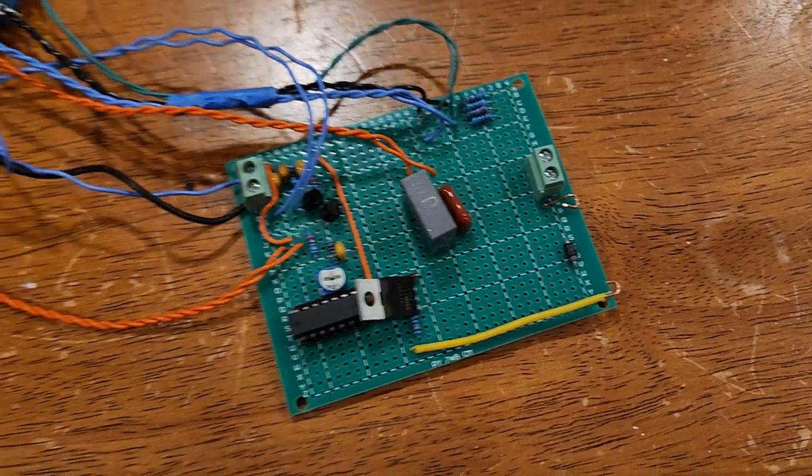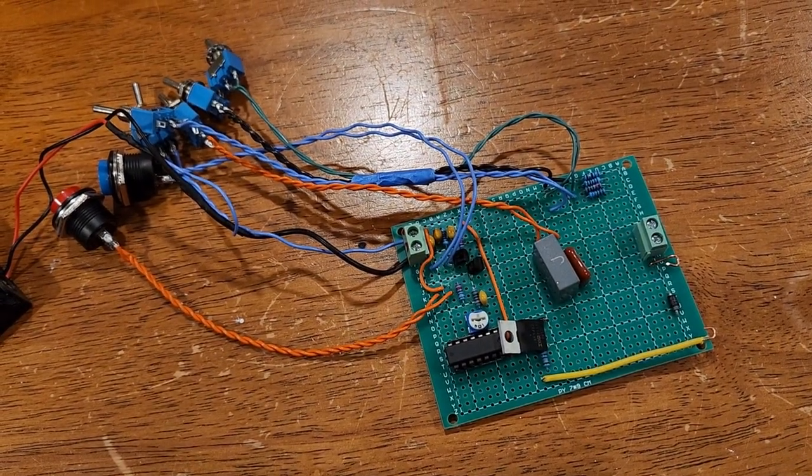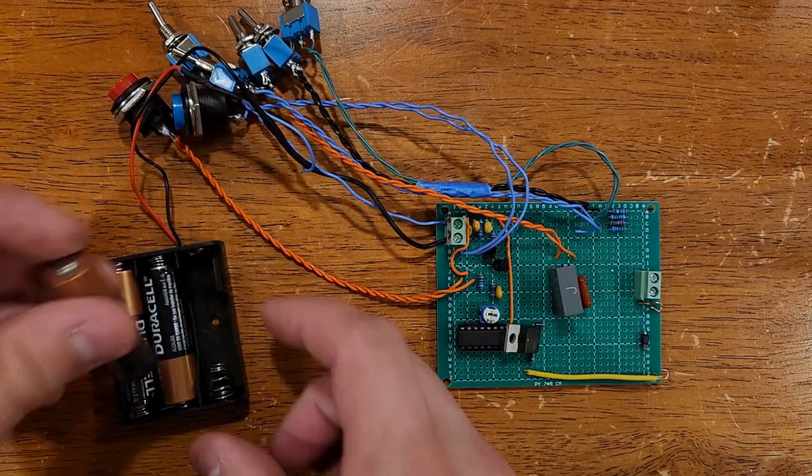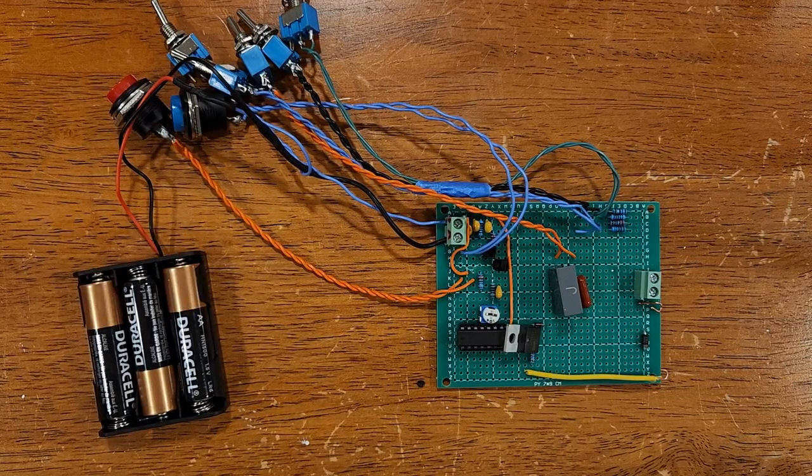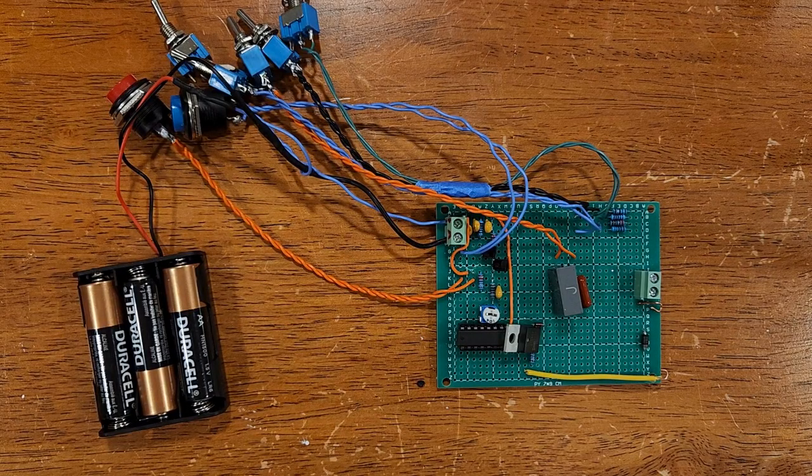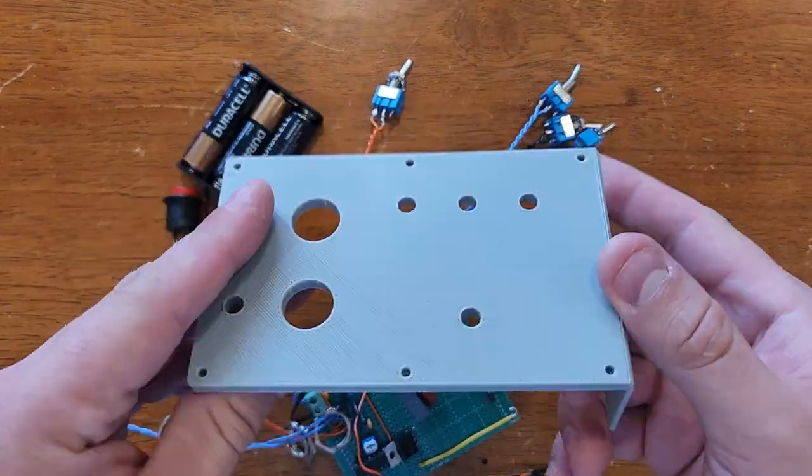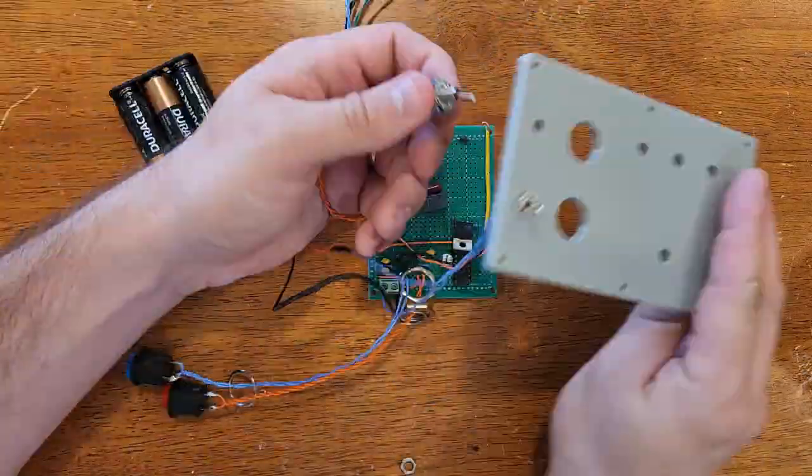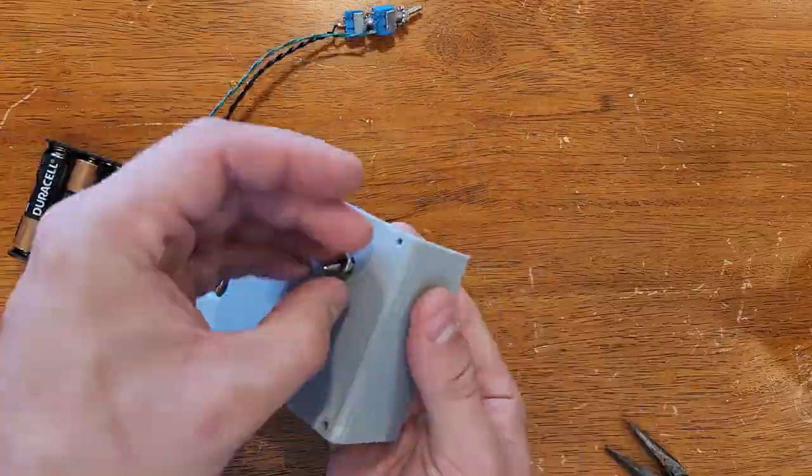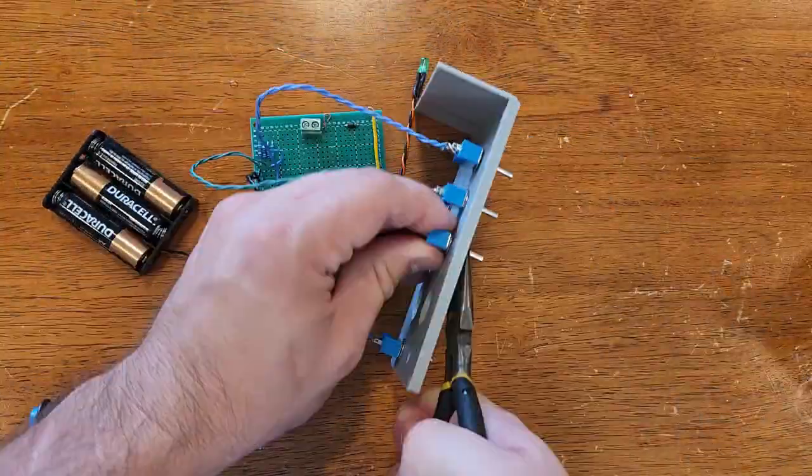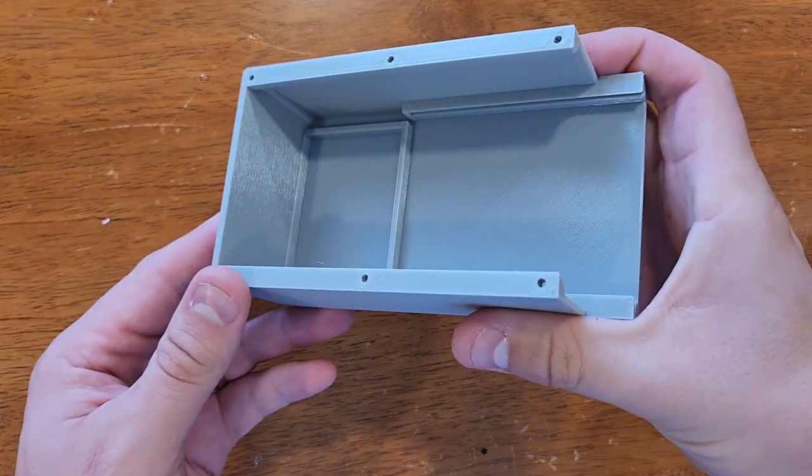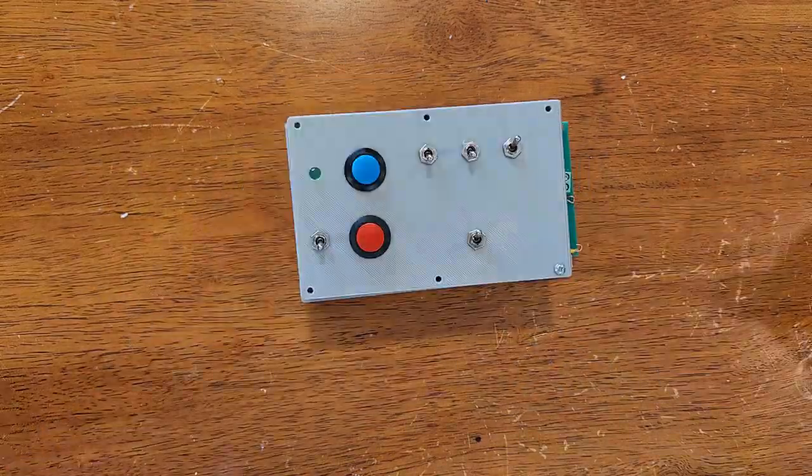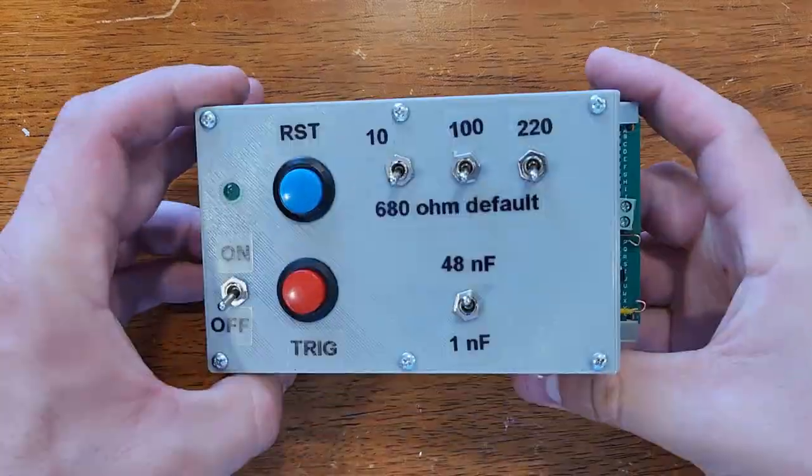I'll break the controls out to external buttons and switches to mount in an enclosure. The 5 volts for the circuit will be provided by three AA batteries, which will make the tester independent of a bench supply and eliminate the annoying switching noise from my power supply, which it has because it's cheap and Chinese. The controls will be mounted on this panel. The board and the batteries will slide into this box, and the control panel will be fastened to it with some number 4 screws. Here's what the finished product looks like.